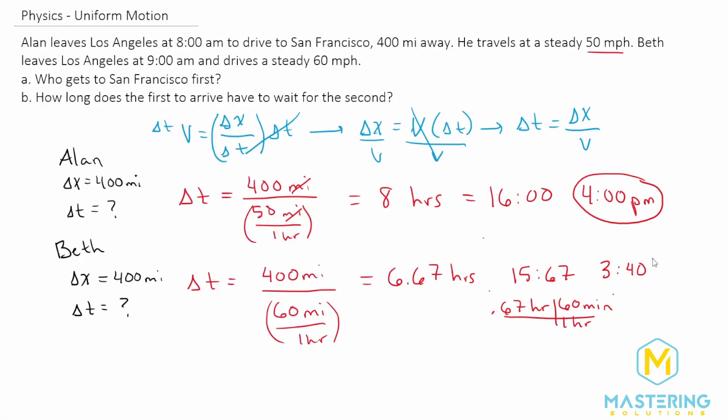So she gets there at 3:40. So Beth obviously does get there first, even though she left after him because she was going quicker. And how long does she have to wait? She has to wait 20 minutes.